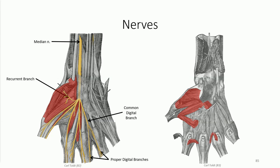The ulnar nerve passes into the wrist deep to the palmar carpal ligament, but superficial to the carpal tunnel. Consequently, it is not affected by carpal tunnel syndrome the same way that the median nerve is. It laces its way between the pisiform and hamate hook, deep to the palmaris brevis muscle, in a region known as the ulnar tunnel or Guyon's canal.